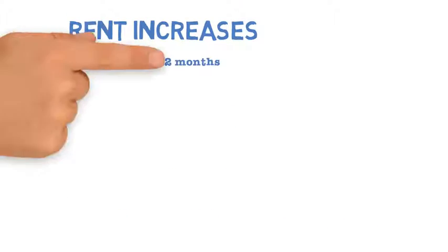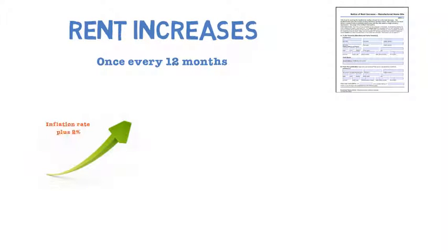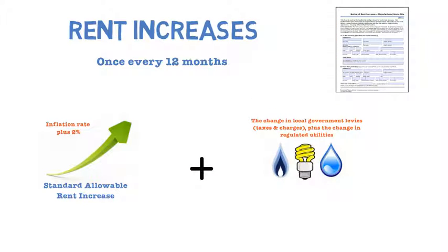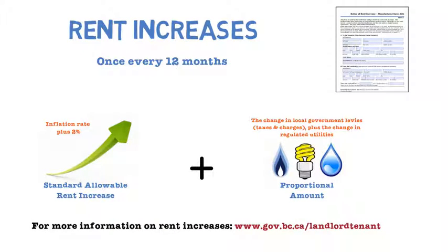The landlord may increase the rent once every 12 months using the correct form from the Residential Tenancy Branch. Landlords may increase the rent by the standard allowable increase plus a proportional amount. The amount of this year's allowable increase and information on the proportional amount is available through the Residential Tenancy Branch website.